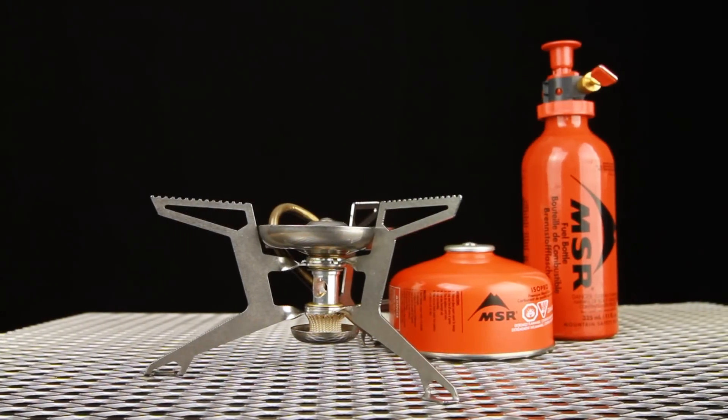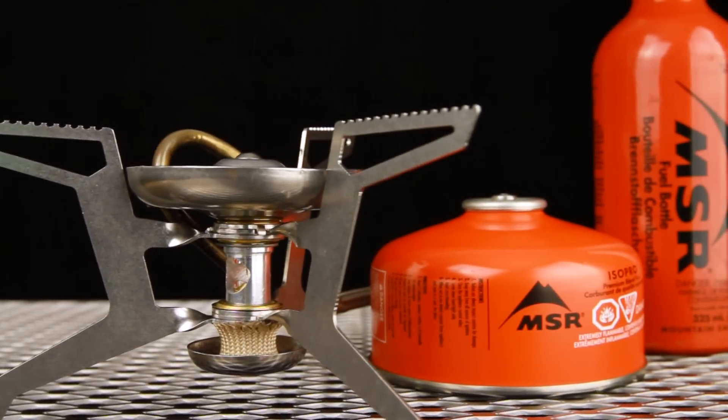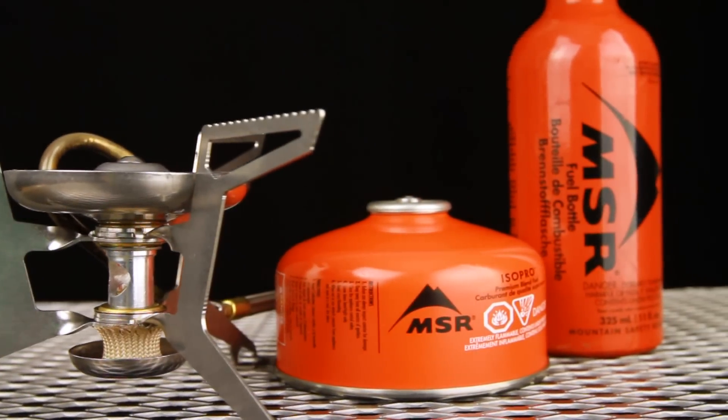There are three different fuel configurations for the WhisperLite Universal, each requiring a different combination of fuel adapter and fuel jet.